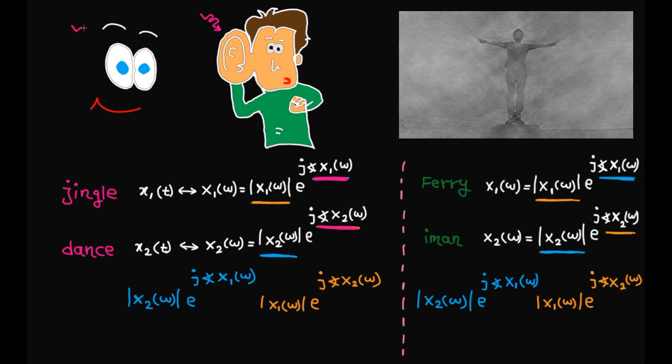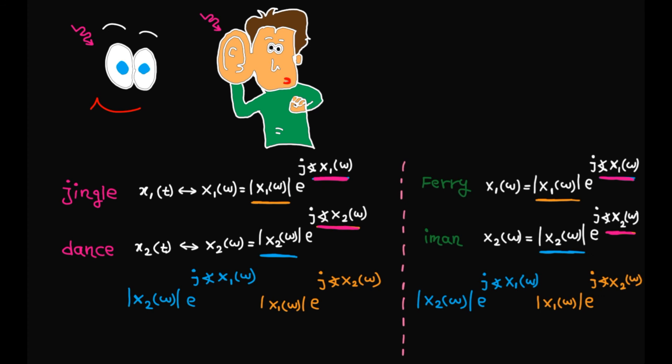So here's the conclusion: our eyes also care more about phase than magnitude. The main takeaway from this tutorial is whenever you design a system, make sure you are not messing with the phase information. Even a small distortion to phase can make your system useless.